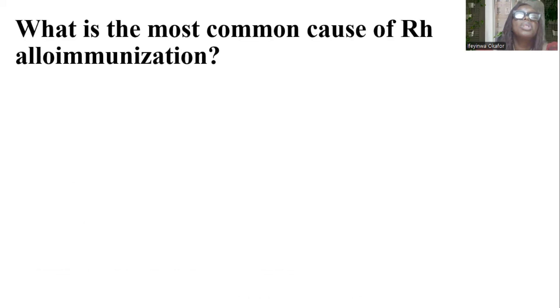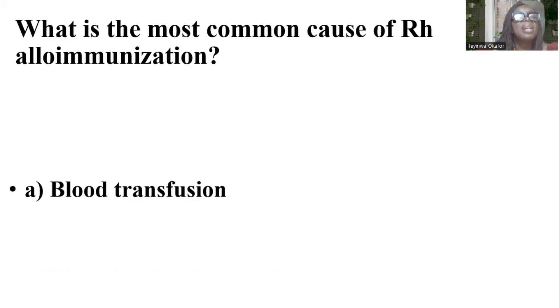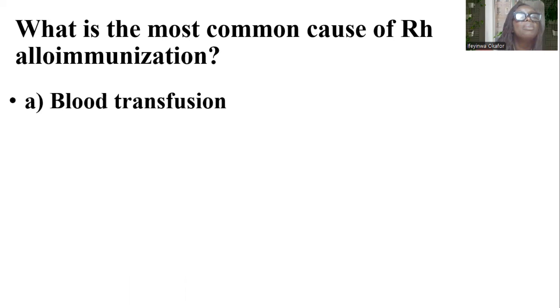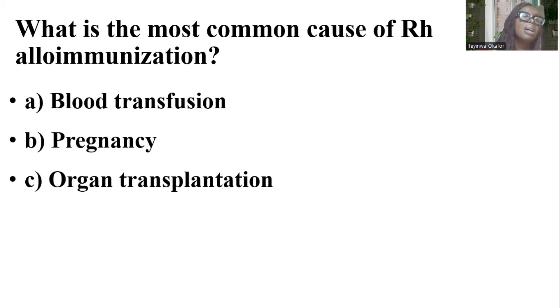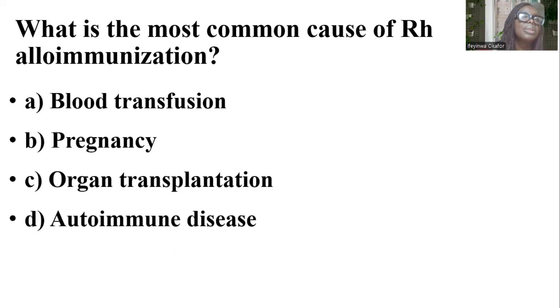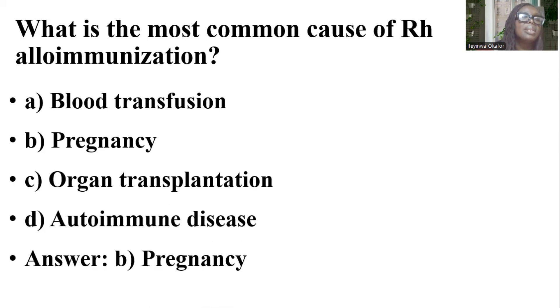What is the most common cause of RHD alloimmunization? Options are: blood transfusion; pregnancy; organ transplantation; autoimmune disease. And the answer is D — pregnancy.